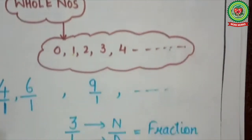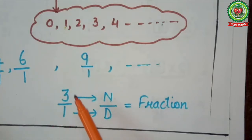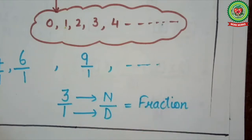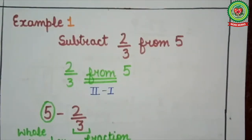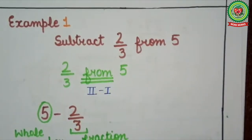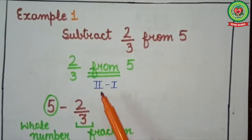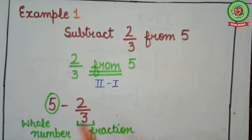For example, if I consider 3, I will write 3 upon 1. Here 3 is the numerator and 1 is the denominator. Therefore 3 is a whole number, but if I write it as 3 upon 1, it will be expressed as a fraction. We can express all whole numbers as a fraction. Now let's understand with an example. Here we have to subtract 2 upon 3 from 5. From means second number minus first number, so I will write 5 minus 2 upon 3.